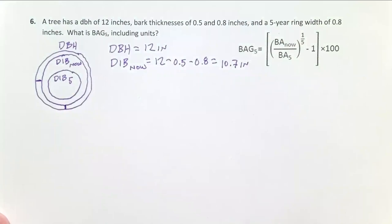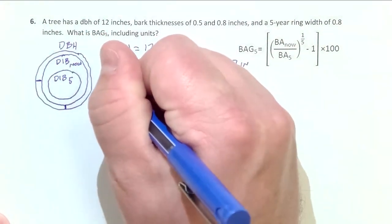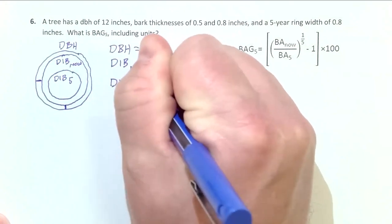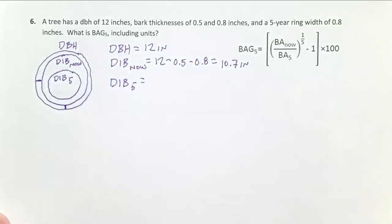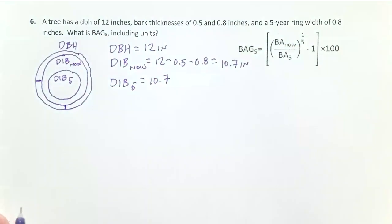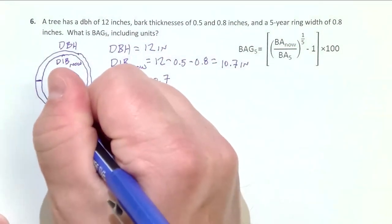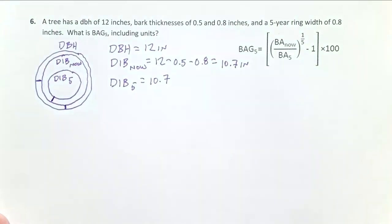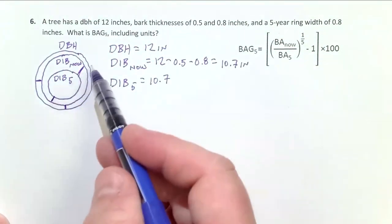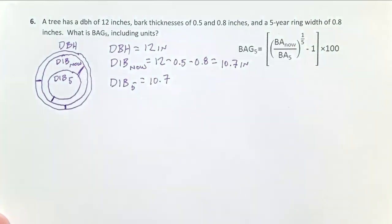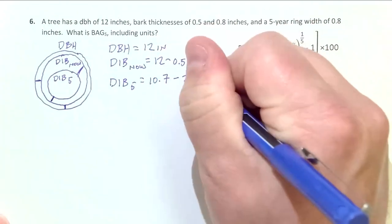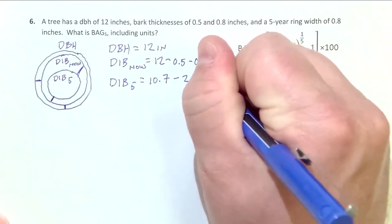Now I want to see what the diameter inside the bark five years ago was. It's going to be a similar process. DIB five equals—we're going to take the diameter inside the bark now, 10.7 inches that we just calculated. What we do now is subtract the increment core measurement we got right here. But we need to double it to also account for this distance. And so that's going to be minus 2 times that 0.8.